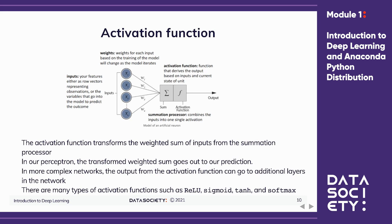The activation function transforms the weighted sum of inputs from the summation processor out to the prediction. In more complex neural networks, the output from the activation function can go to the next layer in the network. However, in our simple perceptron, the output from the activation layer goes straight to our prediction, since there are no additional layers. There are many activation functions including ReLU, Sigmoid, TanH, and Softmax.